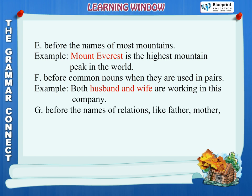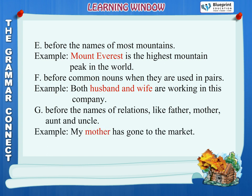Rule G: Before the names of relations like father, mother, aunt, and uncle. Example: My mother has gone to the market.